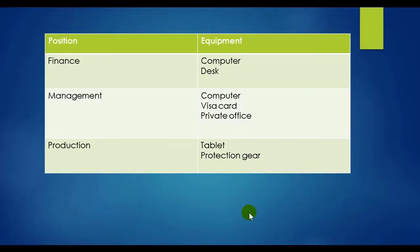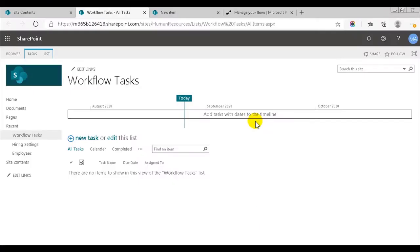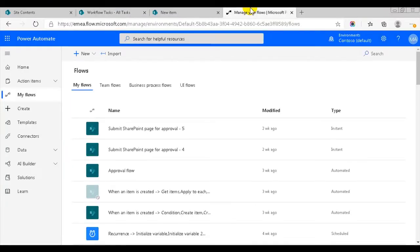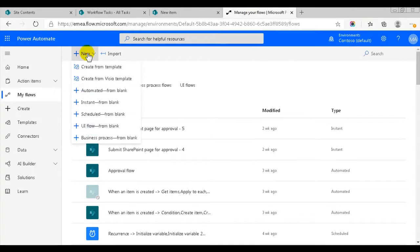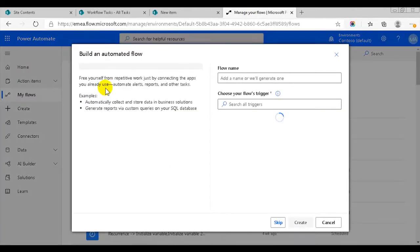Finance staff needs a computer and a desk, while managers should have a computer, a visa card, and an office. People in production need a tablet and protection gear. By using one task per equipment item, we can distribute the responsibility for each equipment item to the appropriate person.